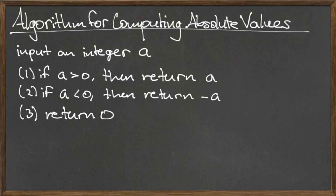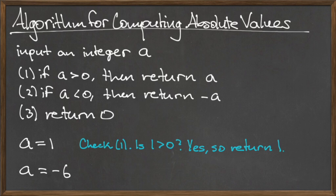Let's run this algorithm with the input a equals one. The first conditional statement asks if a is greater than zero. One is greater than zero, so we return one, and our algorithm ends immediately without executing statements two or three. So for the input a equals one, the output is one.